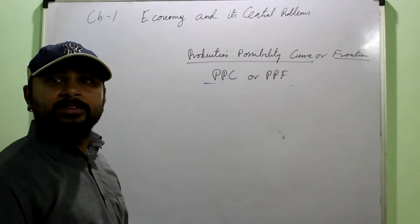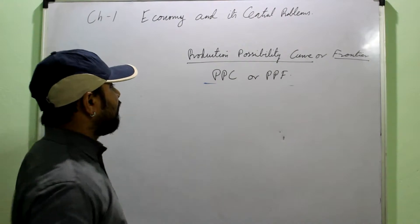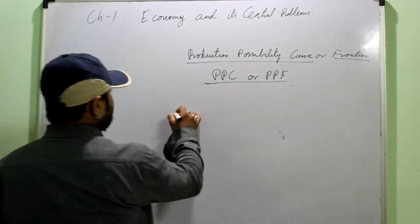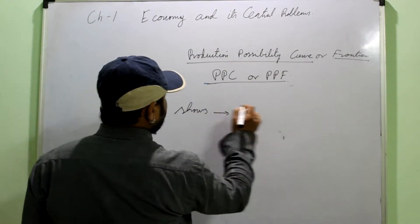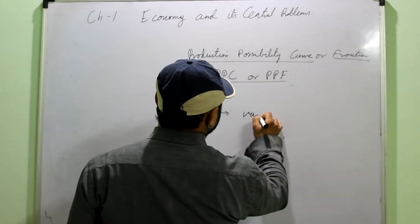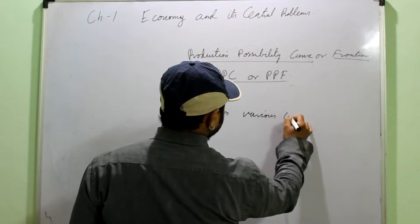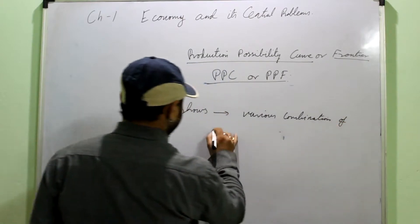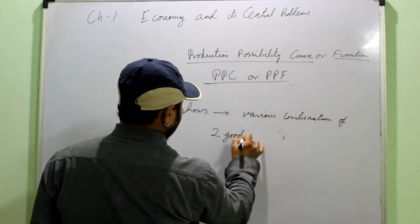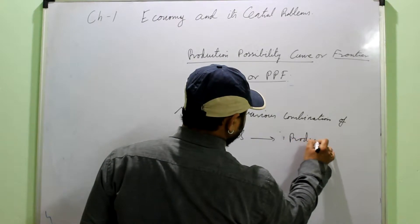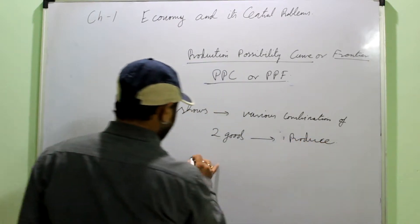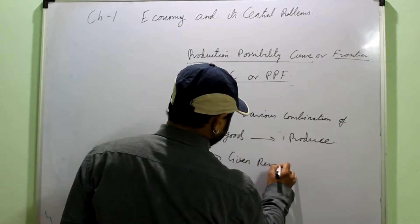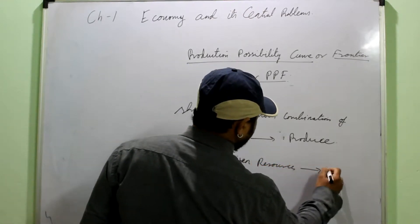The Production Possibility Curve, also known as the Production Possibility Frontier, basically shows various combinations of two goods which an economy can produce with given resources and technology.